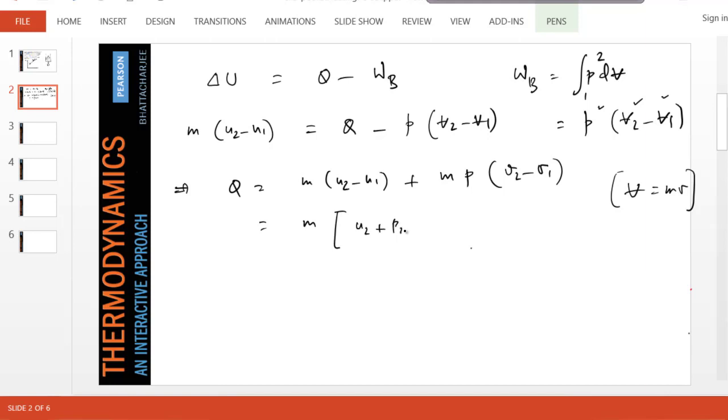If you take mass common and manipulate this equation, you can write this as (u2 + p2v2) minus (u1 + p1v1). See if you agree, because pressure doesn't change in this problem, so I can write it as p1 or p2.